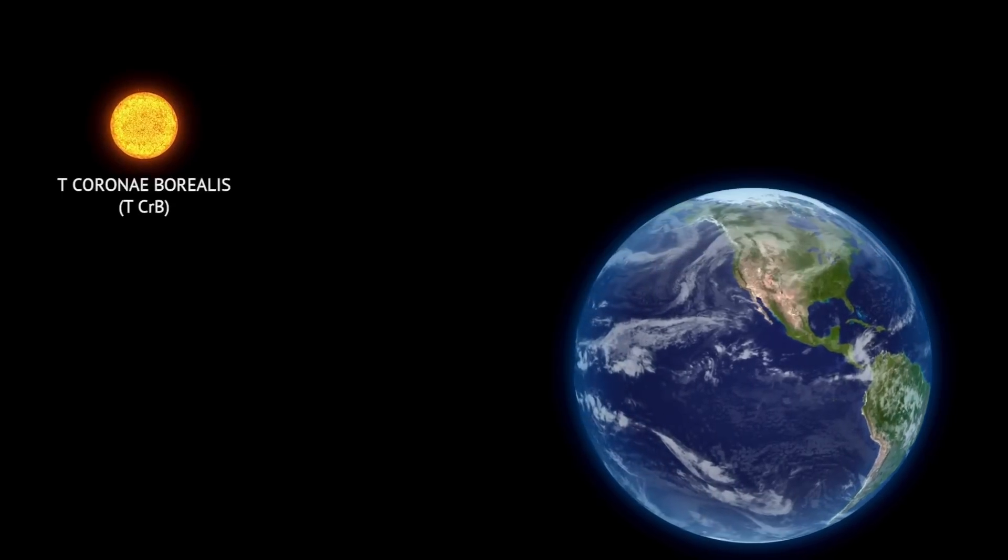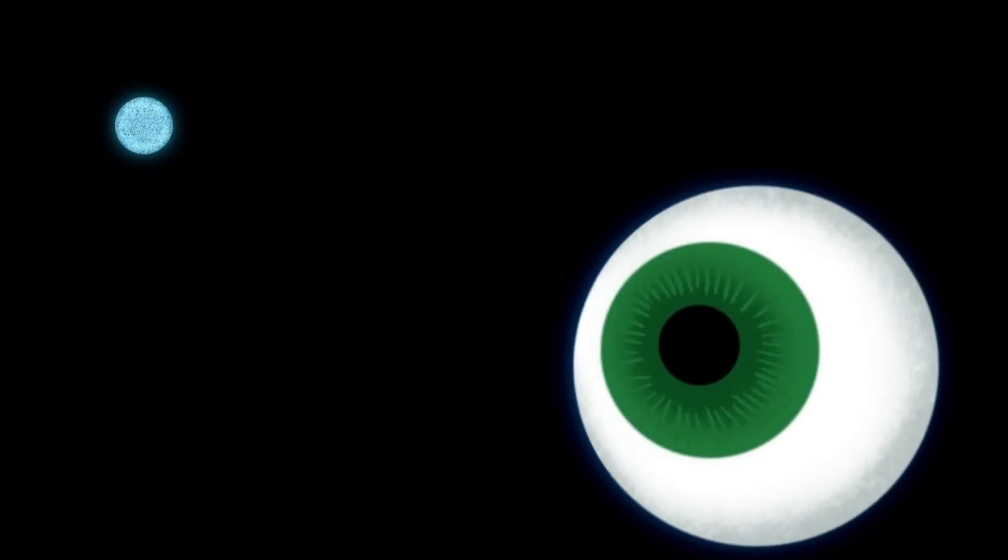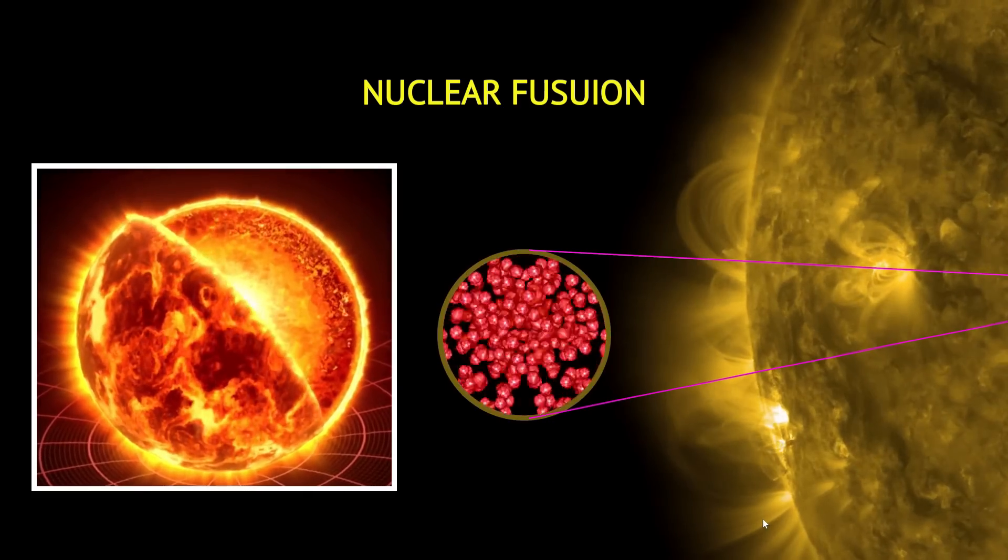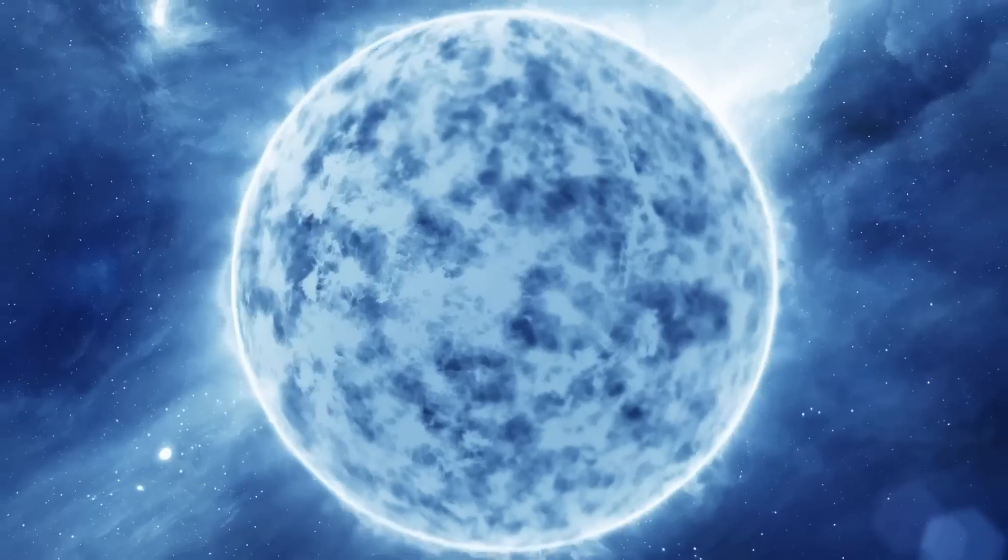TCRB is 2,600 light-years from Earth, meaning that the events we observe today actually occurred 2,600 years ago. Now, during the prime of their lives, most stars are powered by nuclear fusion reactions deep inside their cores.